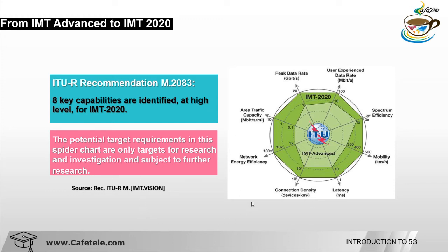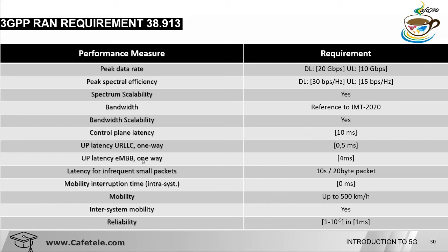Now we look at the 3GPP RAN requirements. 3GPP has different RAN performance measurements and requirements. Peak data rate is 20 Gbps downlink and 10 Gbps uplink. Peak spectral efficiency is 30 bits/s/Hz uplink and 50 bits/s/Hz downlink. For spectrum scalability, similar to LTE bandwidths of 1.4, 3, 5, 10, and 20 MHz, 5G supports 5, 10, 20, up to 100 MHz in FR1, and 400 MHz in FR2.